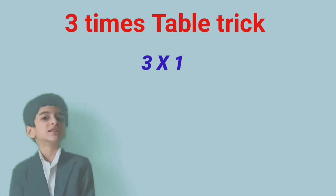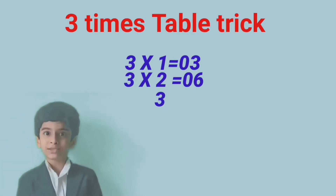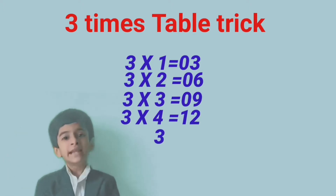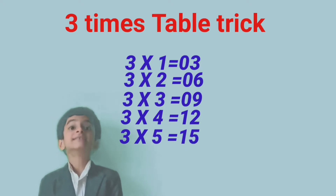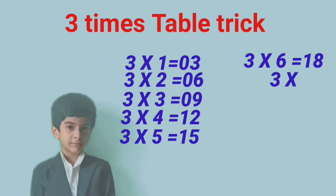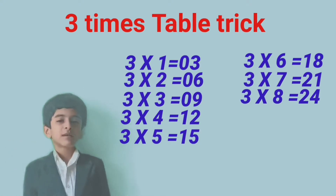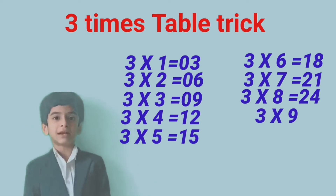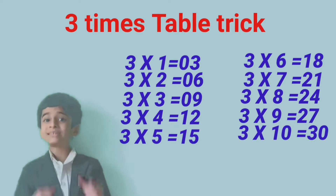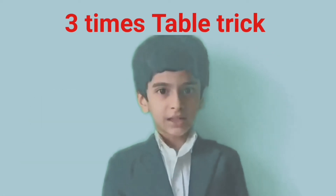Three times one equals three. Three times two equals six. Three times three equals nine. Three times four equals twelve. Three times five equals fifteen. Three times six equals eighteen. Three times seven equals twenty-one. Three times eight equals twenty-four. Three times nine equals twenty-seven. Three times ten, the final and last one, equals thirty.